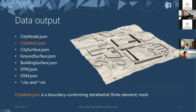The output of the pipeline is a number of JSON data files — our main data storage and communication format. The city model is simply an array of buildings, each with a 2D footprint, a ground height, and a building height — a simple LOD1 model. The main output is the city mesh: a boundary-conforming tetrahedral finite element mesh that conforms to the ground and buildings, is watertight, and has no overlapping tetrahedra or triangles. It's a volume mesh of the air surrounding the buildings when placed inside a bounding box, and can be used for flow simulation, air quality, or electromagnetic simulation.